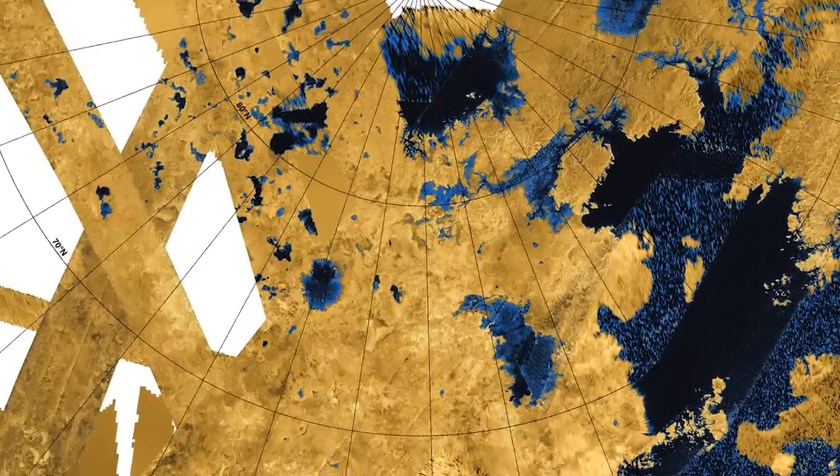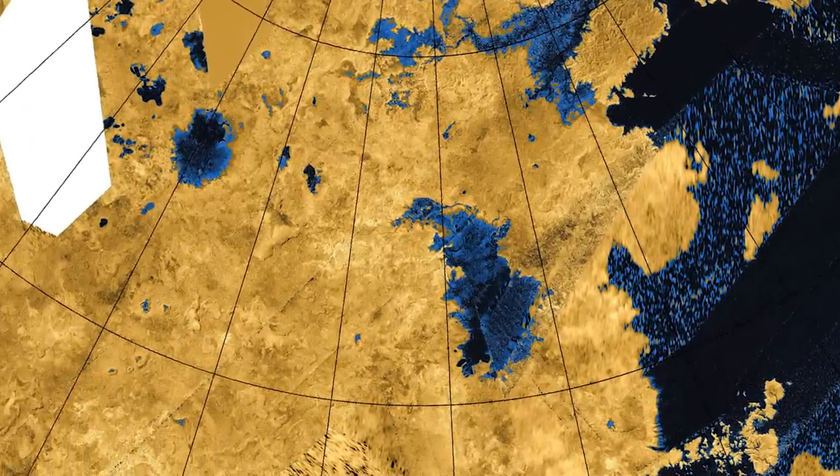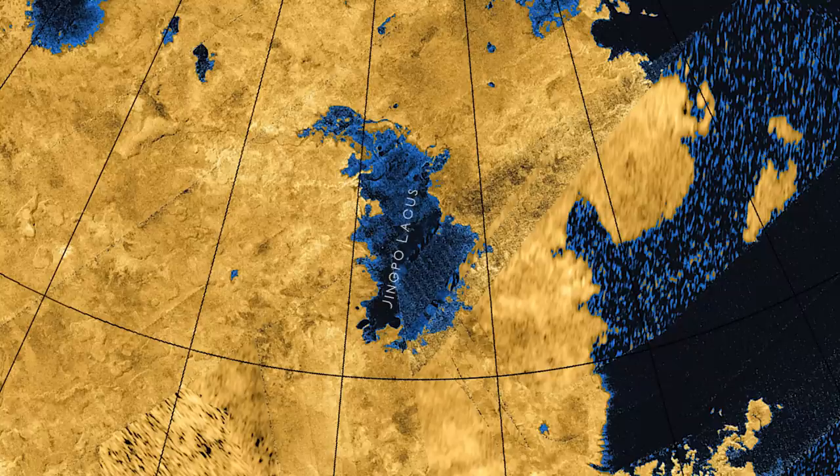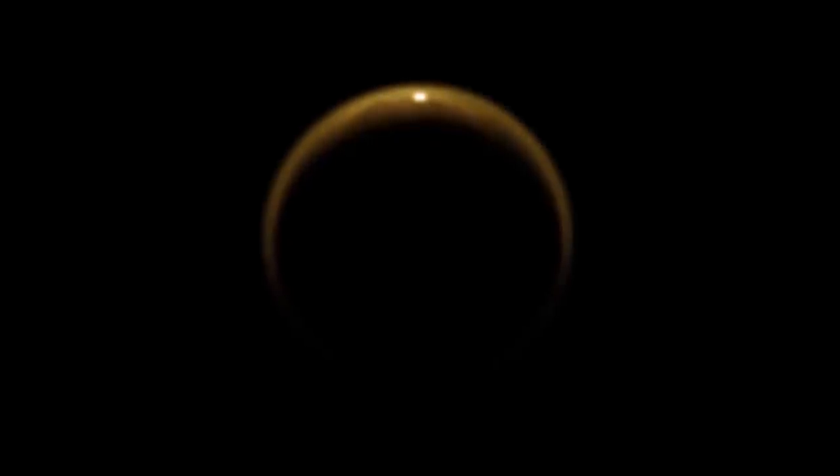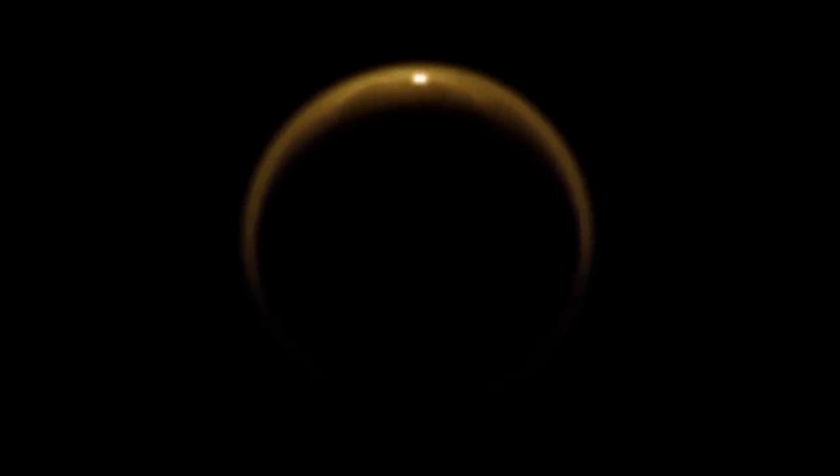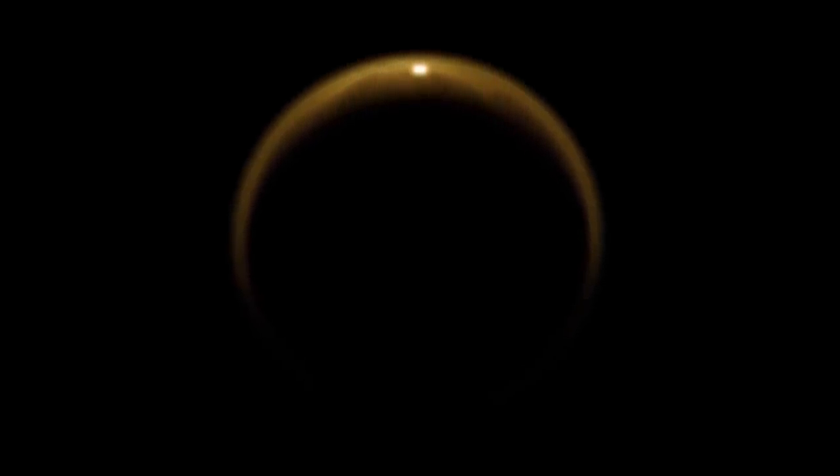When Titan's north pole emerged from 15 years of winter darkness, Cassini discovered a lake called Jingpo Lacus. This stunning photo of the infrared's peculiar reflection was captured by Cassini as sunlight was reflected off the surface of the lake.